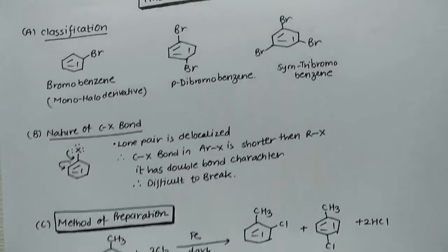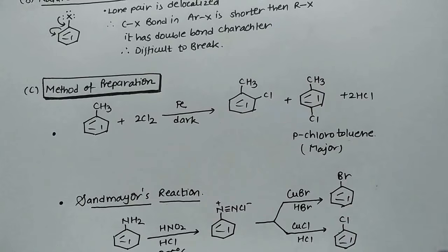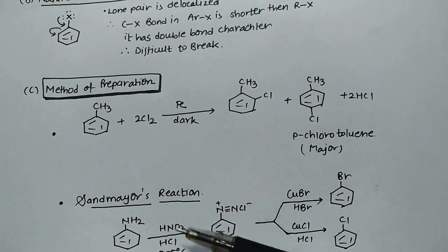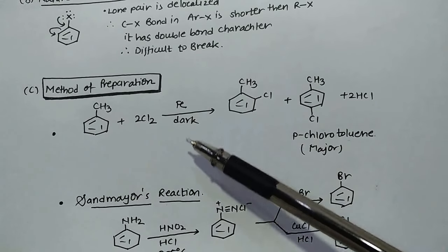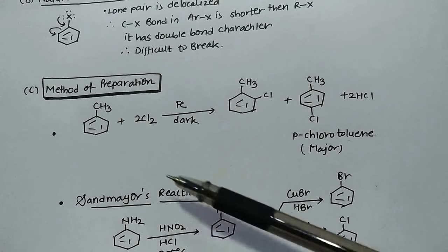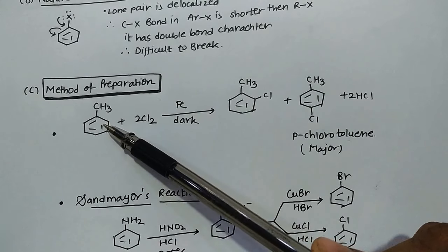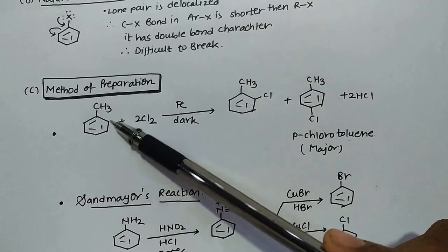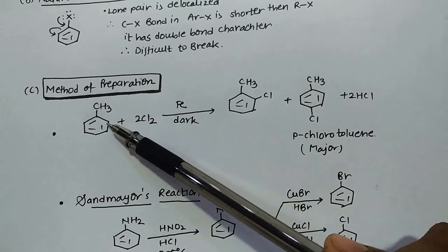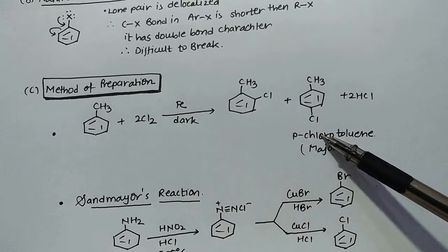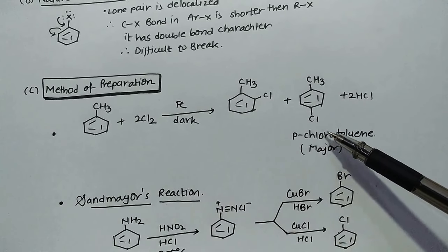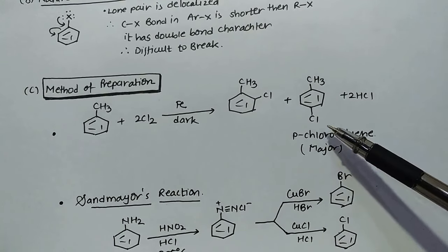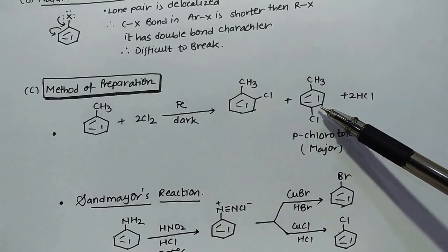Coming on to methods of preparation, we have simply two methods. First method is halogenation and second method is Sandmeyer's reaction. In the first method we have the example of toluene. Toluene you know very well is ortho-para director, so chlorination will occur at ortho and para positions, and naturally most of the time para is the major product. So para-chlorotoluene will be the major product.